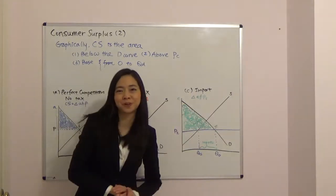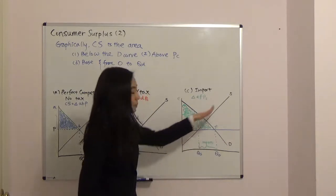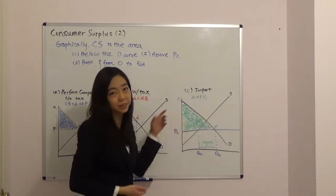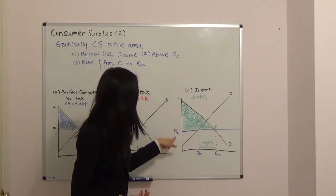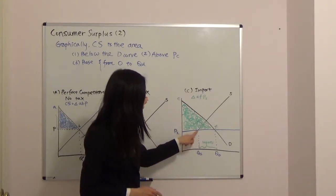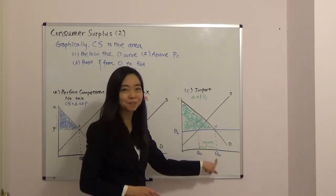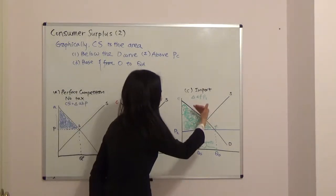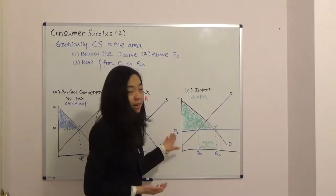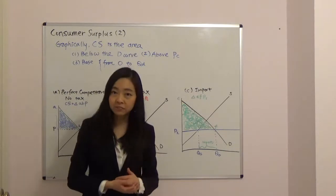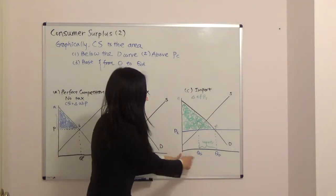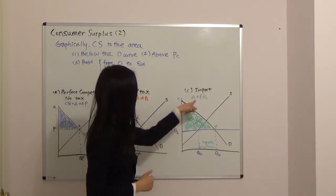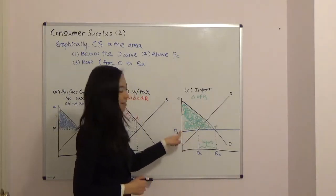Now suppose you're in the international trade class and you have imports. This is the demand curve and that's the supply curve. Your international price is PI, which is lower than the local price, and therefore we have imports. After we have imports, the quantity supplied is only at the lower level, and the quantity demanded is higher — the difference is your imports. Your consumer surplus will be the area below the demand curve, above the international price PI. The base of the triangle is from zero to the quantity demanded QD, which is larger than QS. So your consumer surplus is triangle EFPI — a much bigger triangle.